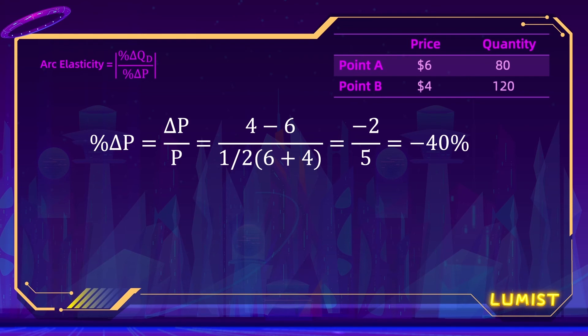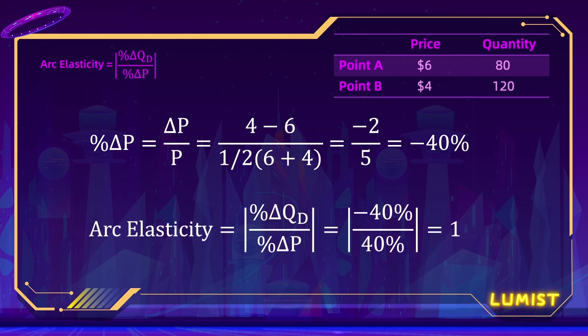Finally, we can now solve for the arc elasticity between point A and point B, which is the percentage change in quantity demanded divided by the percentage change in price, and we take the absolute value. This gives us an elasticity of exactly one.